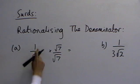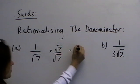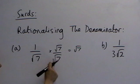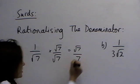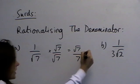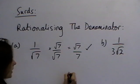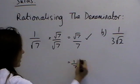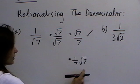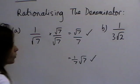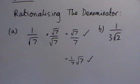So 1 times root 7 on the top is root 7. Root 7 multiplied by itself is just 7. You can leave your final answer in this form, but be aware that that can also be written as a seventh of root 7. So this form or this form will be correct.